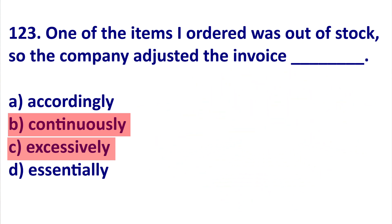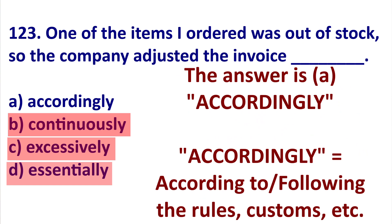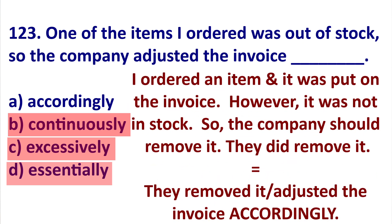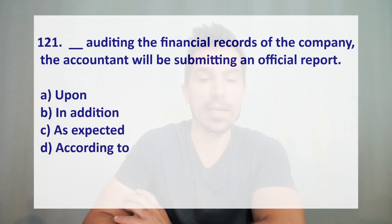Now we have 'essentially' or 'accordingly.' The answer is 'accordingly.' This is related to 'according to the rules' or 'according to the situation' — meaning it matches the rules or situation. Example: the soccer player touched the ball with his hand; according to the rules, he received a red card — so accordingly, he received a red card. In this TOEIC question, because one item was not in stock, the company adjusted the invoice accordingly — according to the situation. Therefore the answer is A.